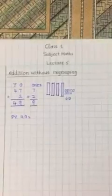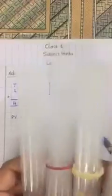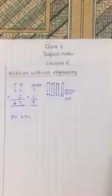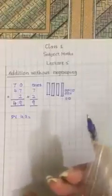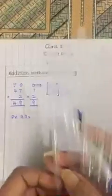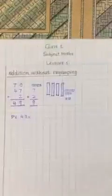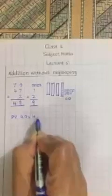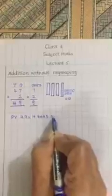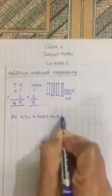So there are 4 tenths and 9 ones. 1, 2, 3, 4 tenths and 9 ones. 1, 2, 3, 4, 5, 6, 7, 8, 9. So 4 tenths and 9 ones.